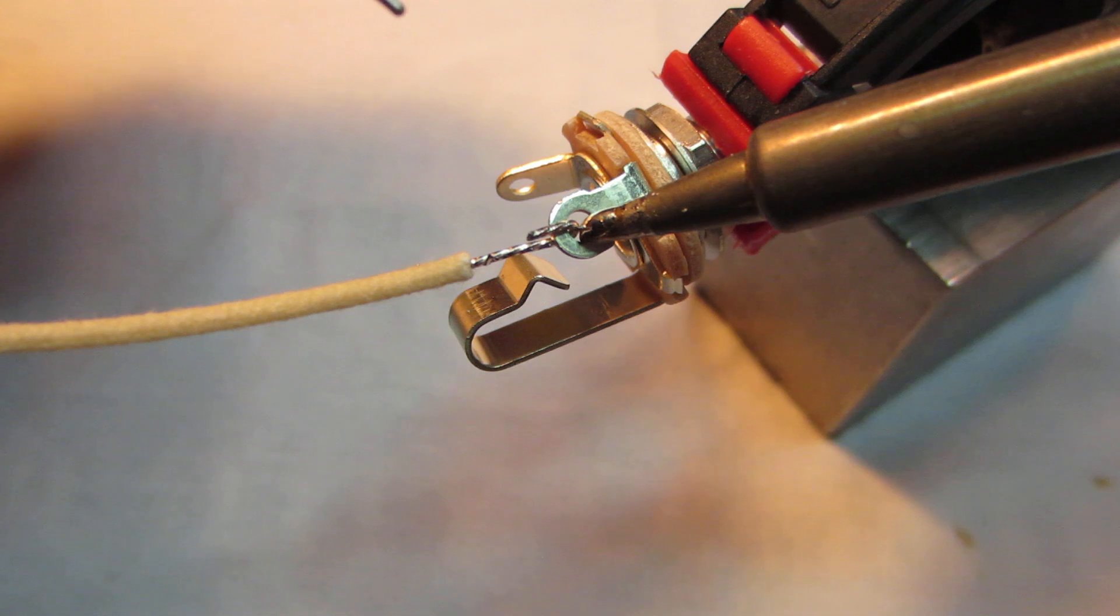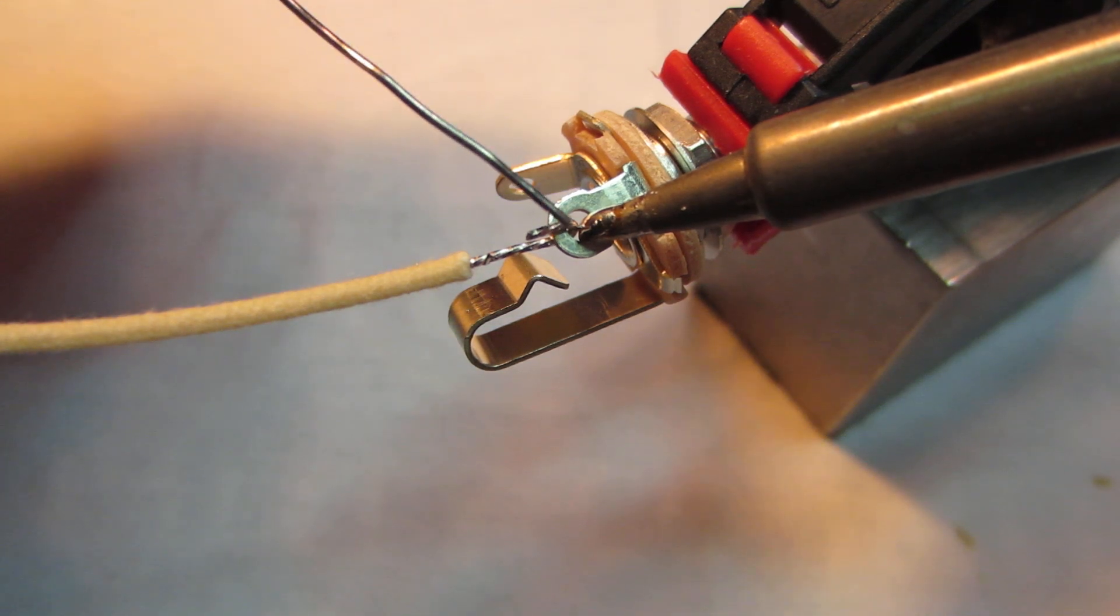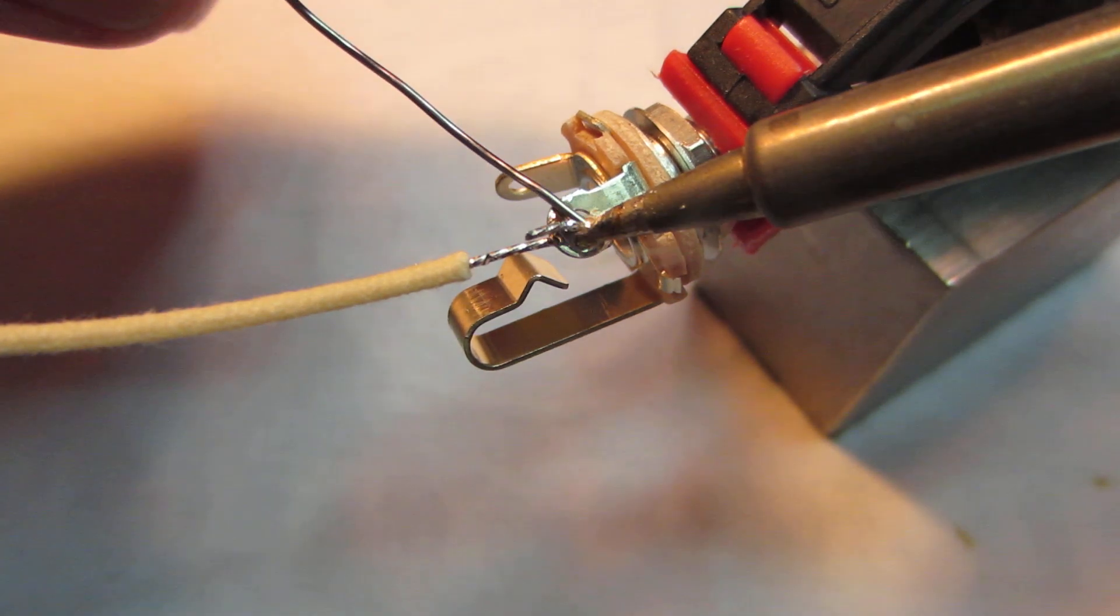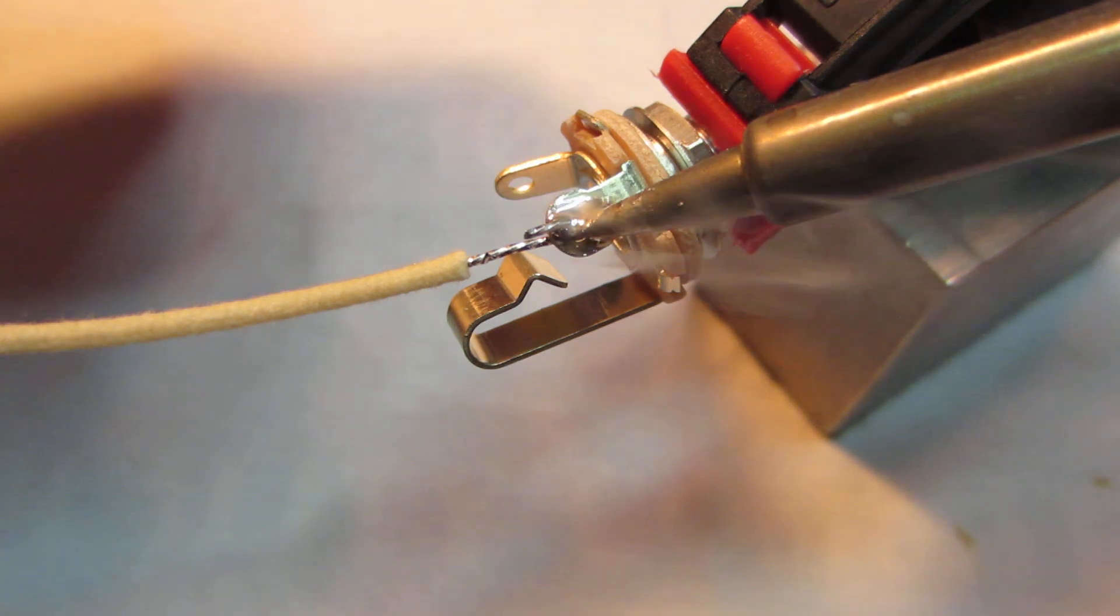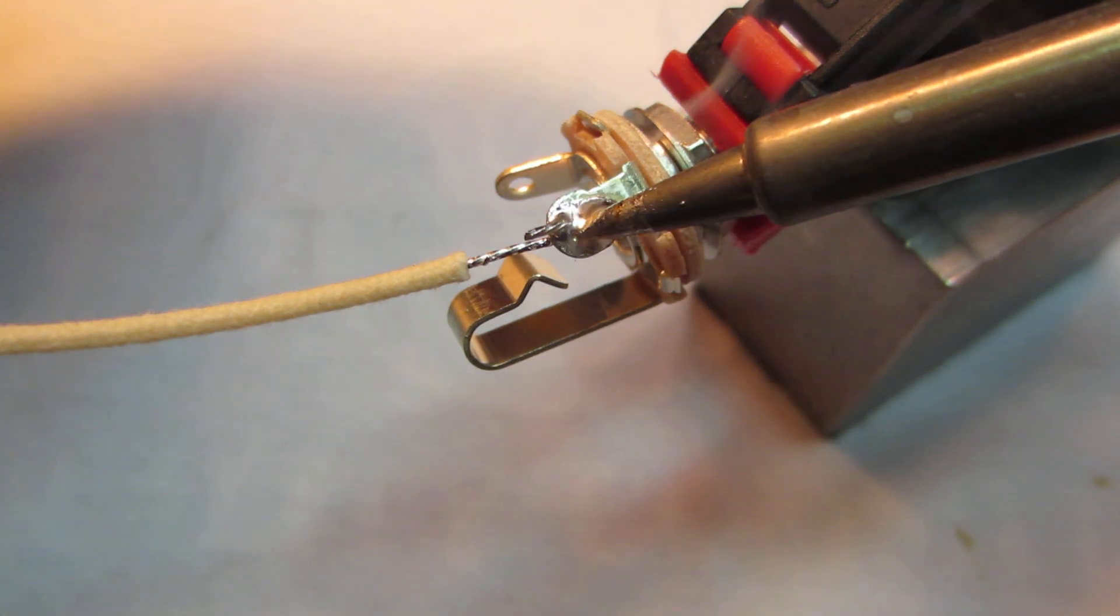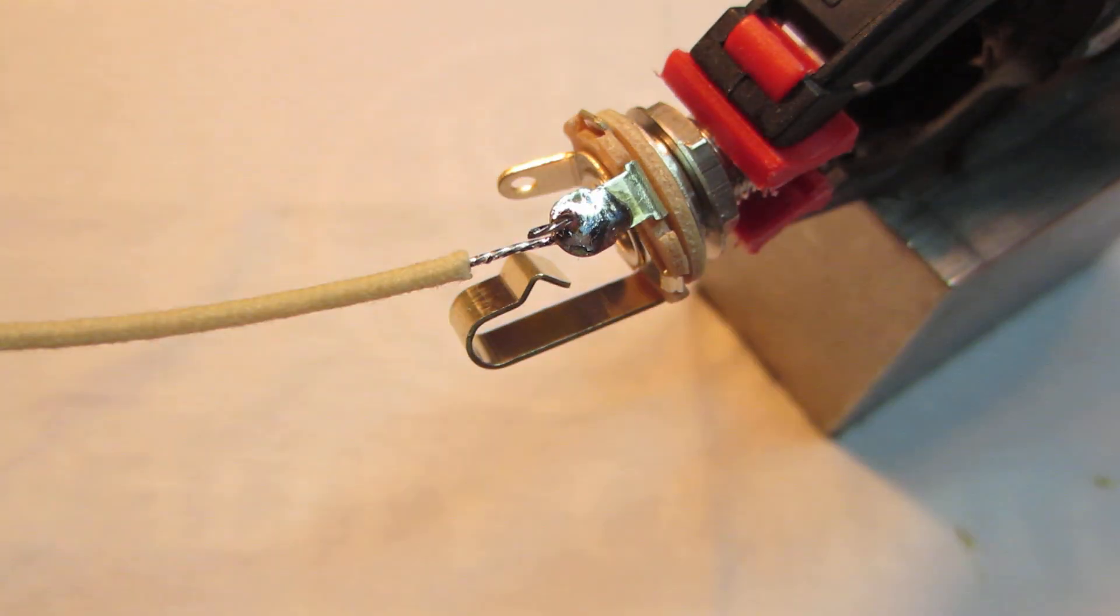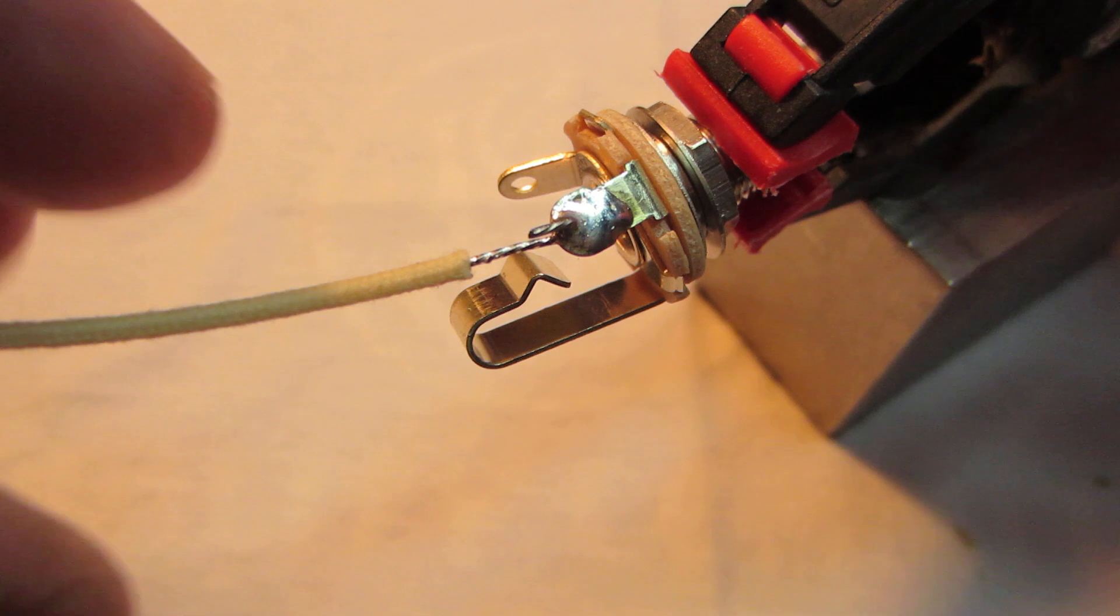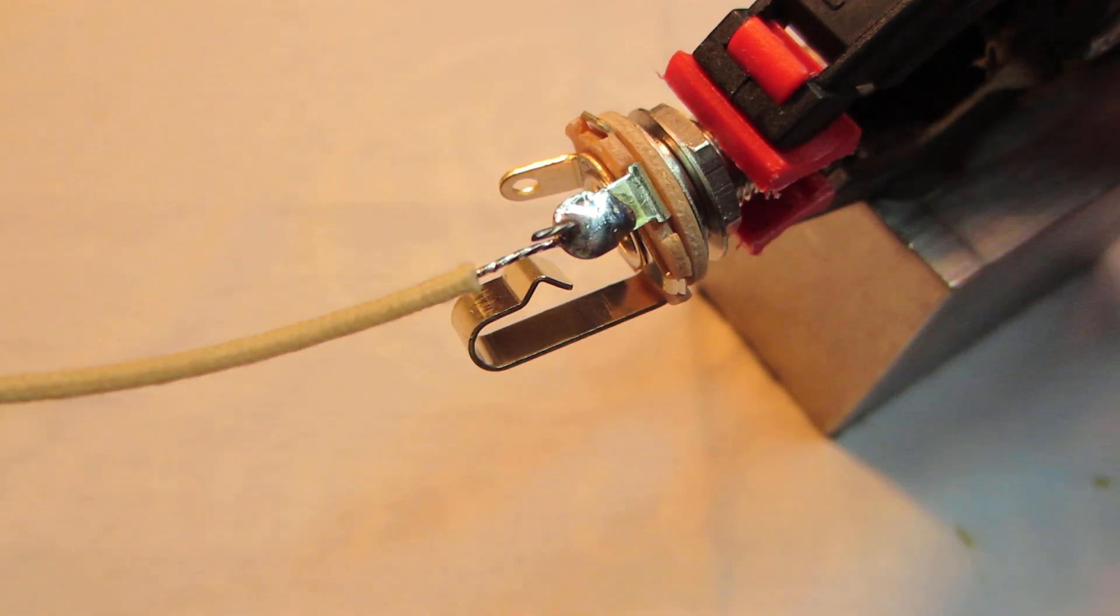Then apply the solder. It should flow like water and you'll see it liquefy. You remove the iron and it sets up, and you've got a good solid mechanical as well as electrical connection. It's that simple.